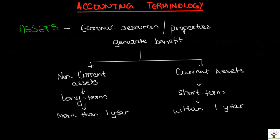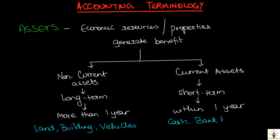Examples of non-current assets could be land, building, furniture, and motor vehicles of the business, because they can be used for a longer period in the business. Examples of current assets could be cash and bank balances, because these change value frequently, as well as goods of the business. We will look at what goods means later.